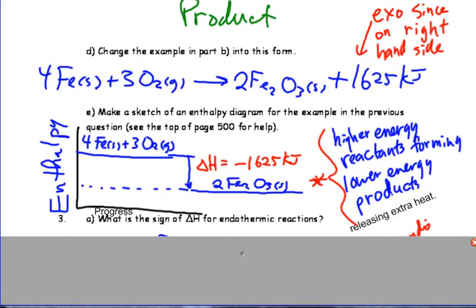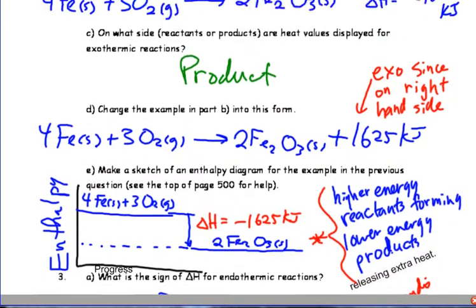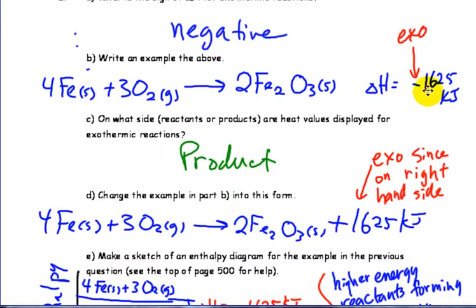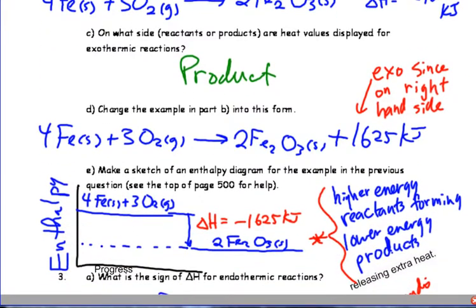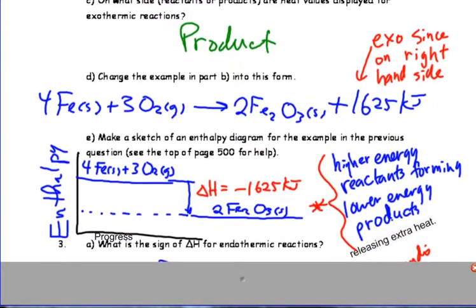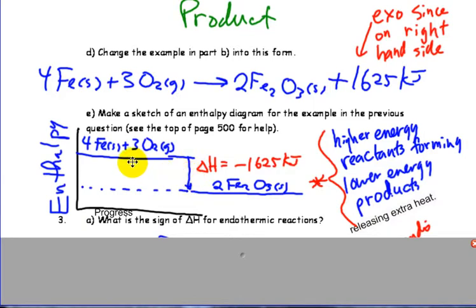Okay, so exothermic reactions, three ways we can kind of think of them. Enthalpy off to the side as a negative, as a product, or as a diagram here illustrating going from high to low energy.